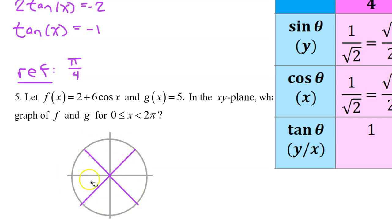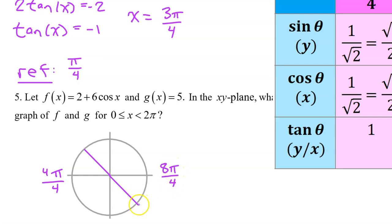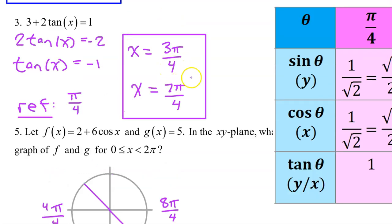On the interval from 0 to 2π, here are the 4 angles with a reference angle of π/4. We know that tangent is the slope of the terminal side. Since we want tangent to equal negative 1, we will restrict ourselves to quadrants 2 and 4 where the slope and thus the tangent is negative. We can think of π as 4π/4, so the angle in the second quadrant is 3π/4. We can think of 2π as 8π/4, so this angle in the fourth quadrant is 7π/4.